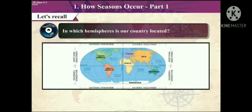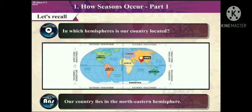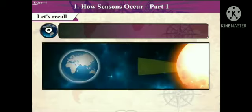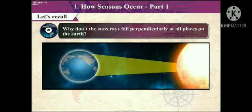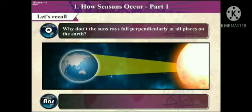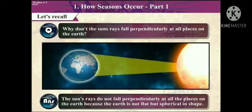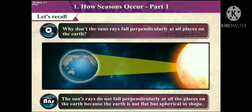In which hemisphere is our country located? Answer: Our country lies in the north-eastern hemisphere. Why don't the sun rays fall perpendicularly at all places on the earth? Answer: The sun's rays do not fall perpendicularly at all places on the earth because the earth is not flat but spherical in shape.